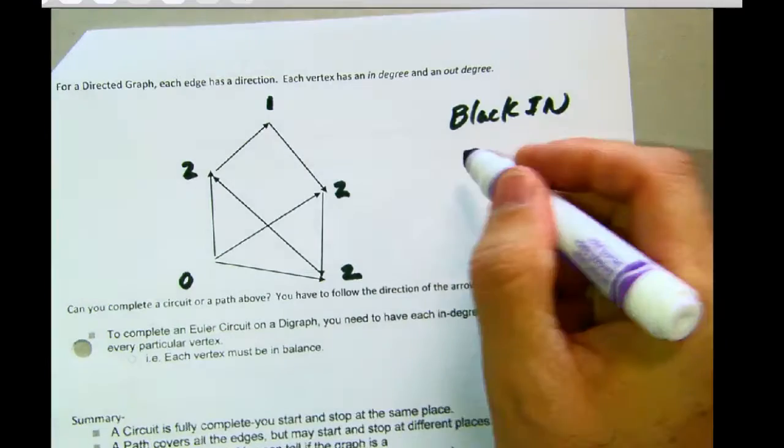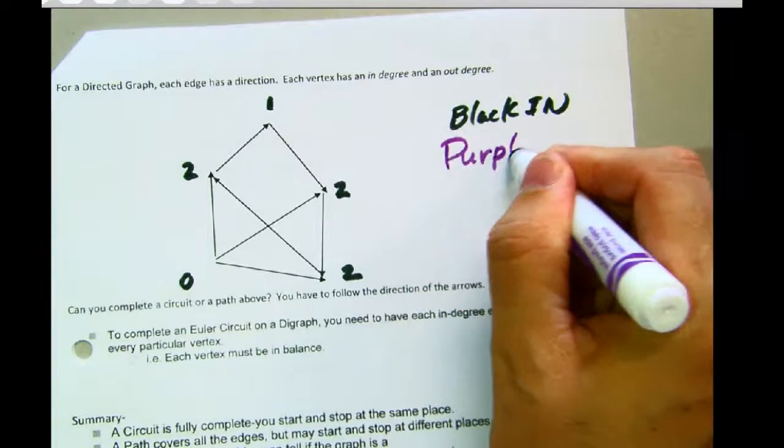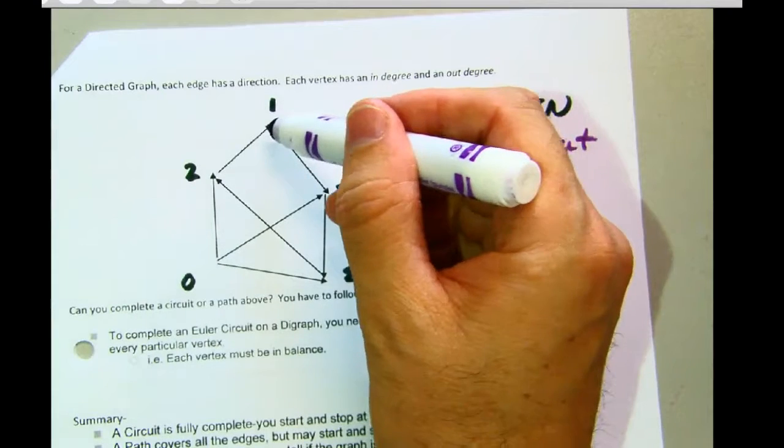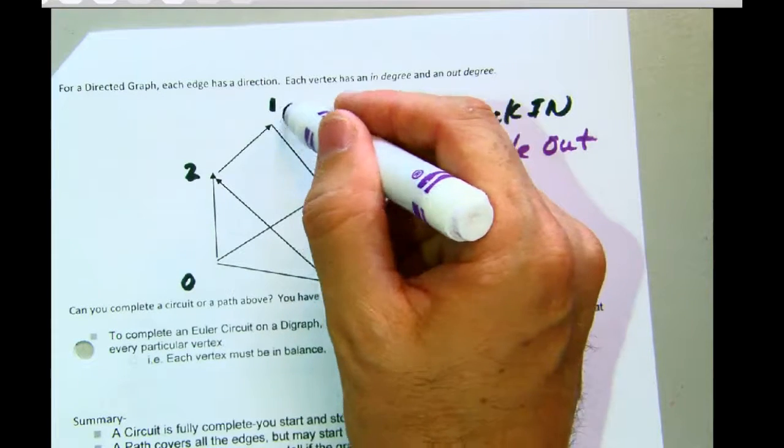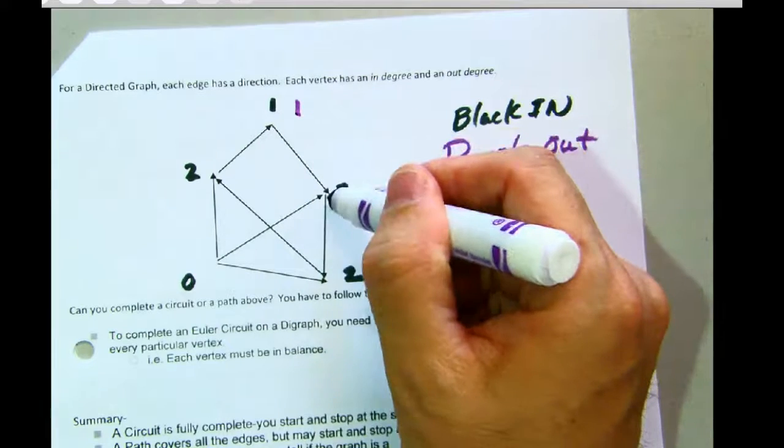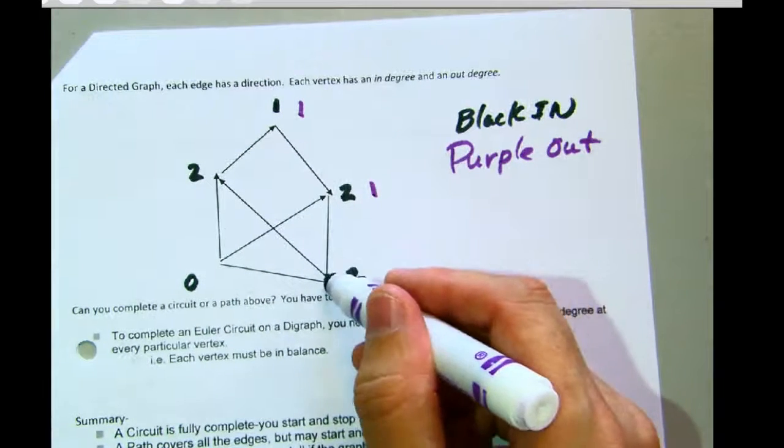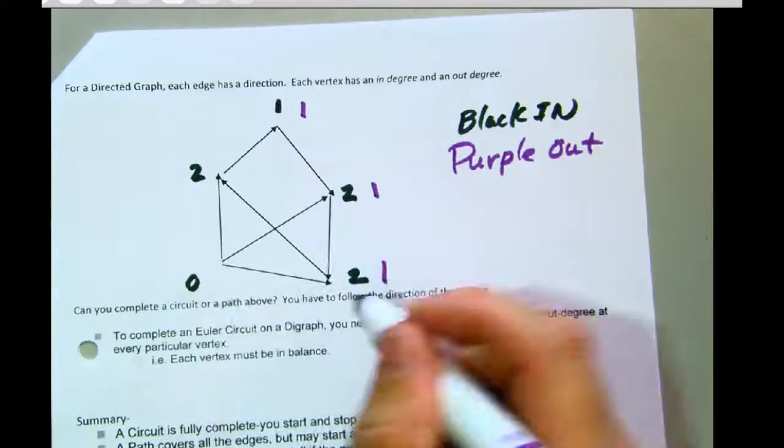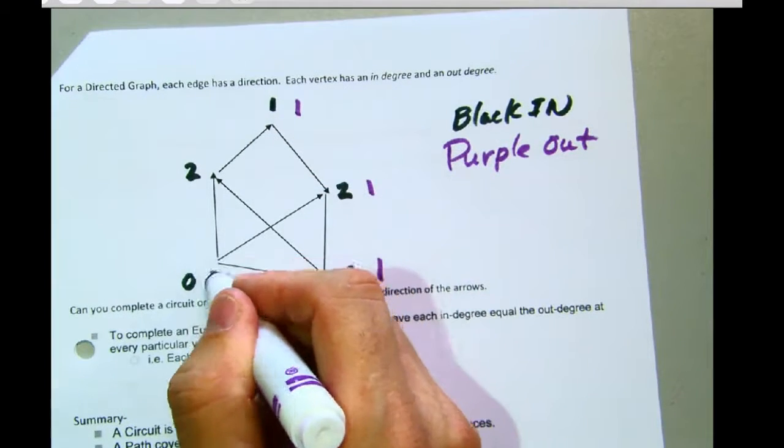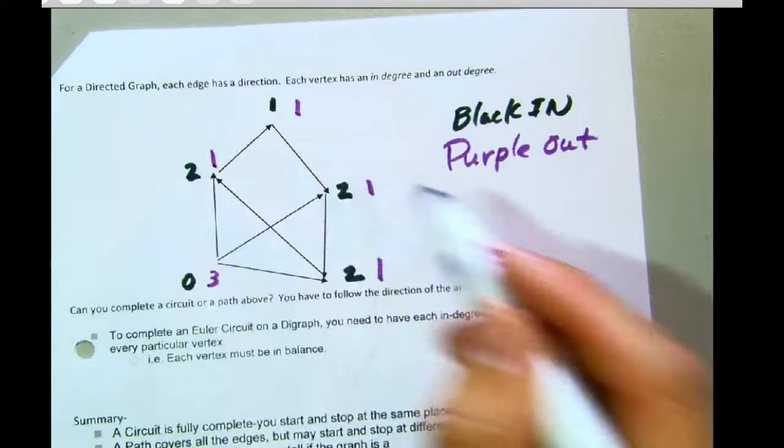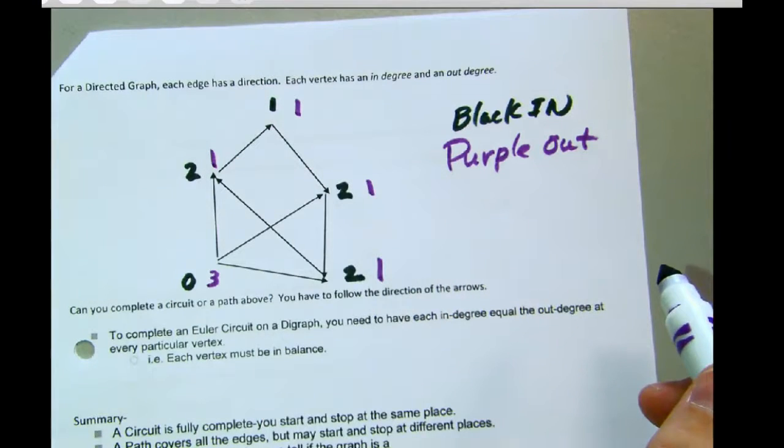Now if I do this one with the purple, these will be the out. So from each vertex, how many of these arrows are shooting out from it? Well, this one would be one. This one would be one. This one has one. It's going that way, out-degree. This one has three out-degrees. And then this one has one out-degree.